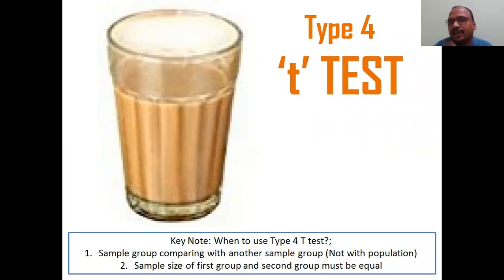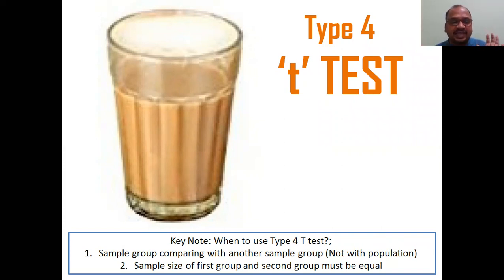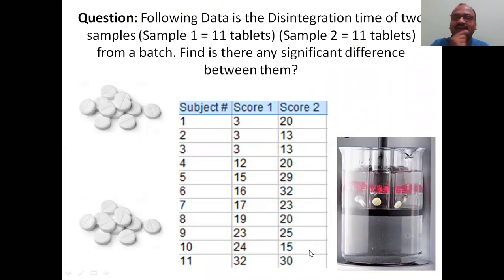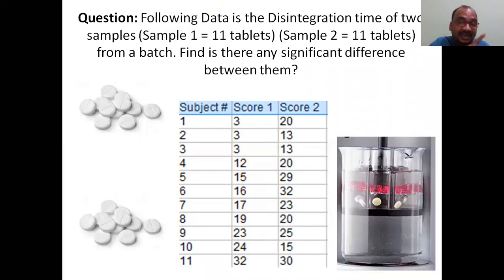Type 4 is used when comparing one sample with another sample, and when the sample sizes of both groups are equal. If the sample size of the first group equals the sample size of the second group, you use Type 4. In this example, Score 1 has 11 samples and Score 2 also has 11 — they are equal. Since both samples are equal and we are comparing one sample with another, we select Type 4. If unequal, use Type 3.